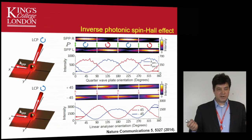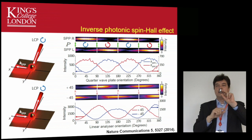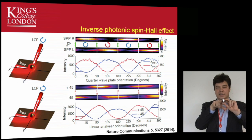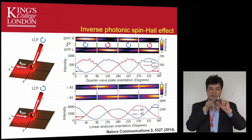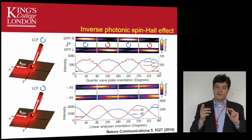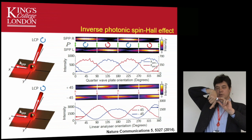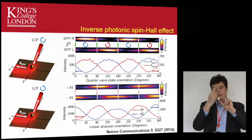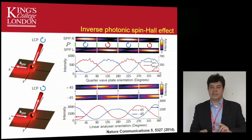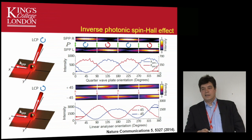The transverse spin is actually present in all kinds of waves that have evanescent components. In free space propagating light, the electric field rotates around the wave vector, so the spin vector is always oriented along the k-vector - this is longitudinal spin. However, in an evanescent wave, in a surface plasmon polariton in particular, the spin is oriented perpendicular to the wave vector because the electric field rotates in the transverse direction. This transverse spin leads to the very interesting effect of the inverse photonic spin Hall effect.